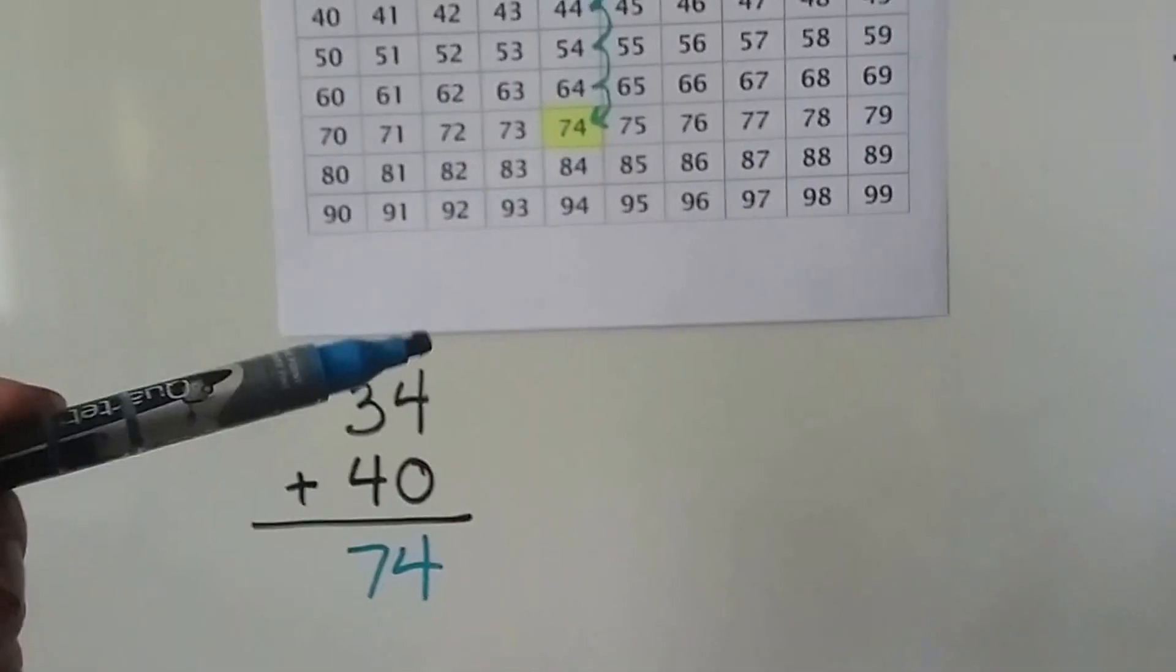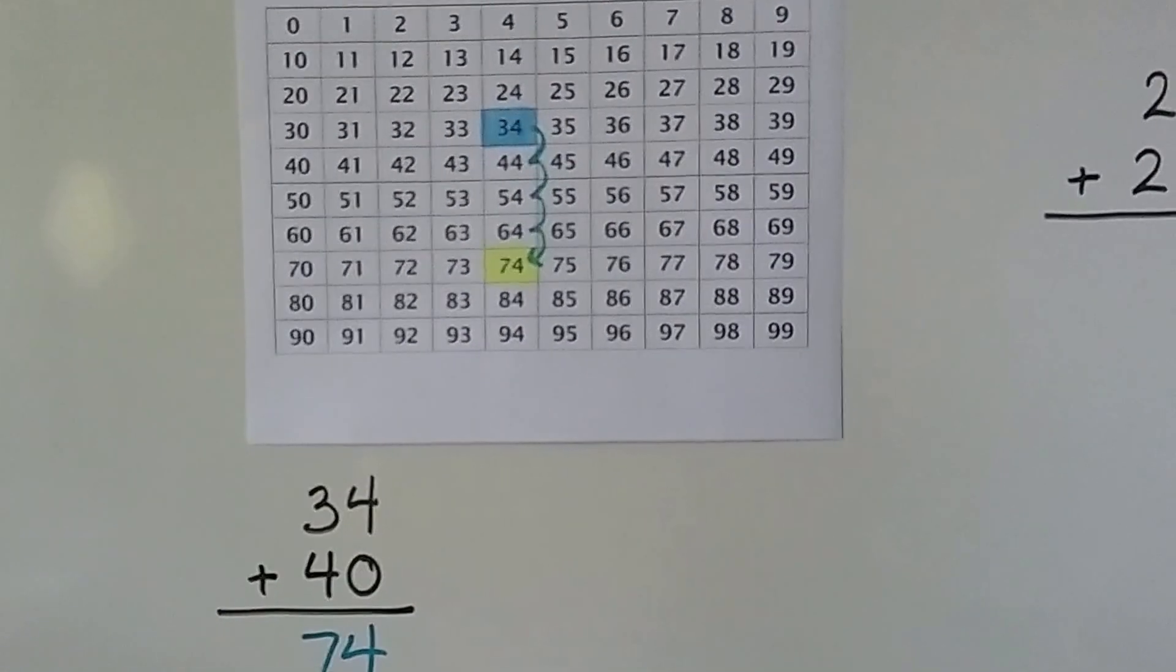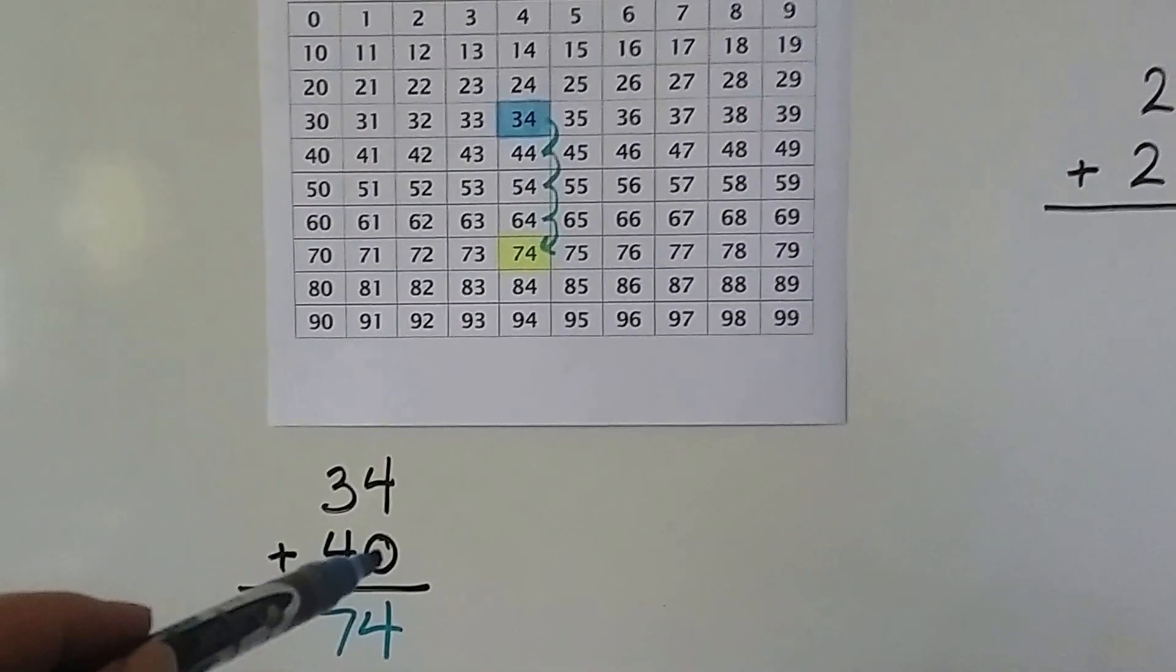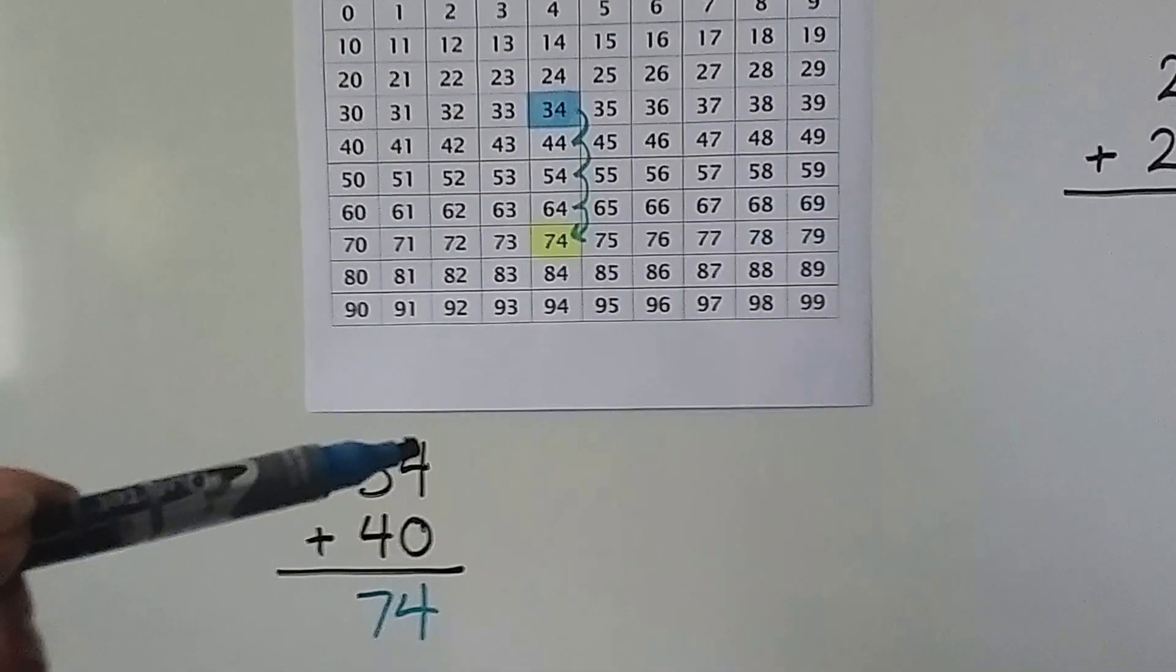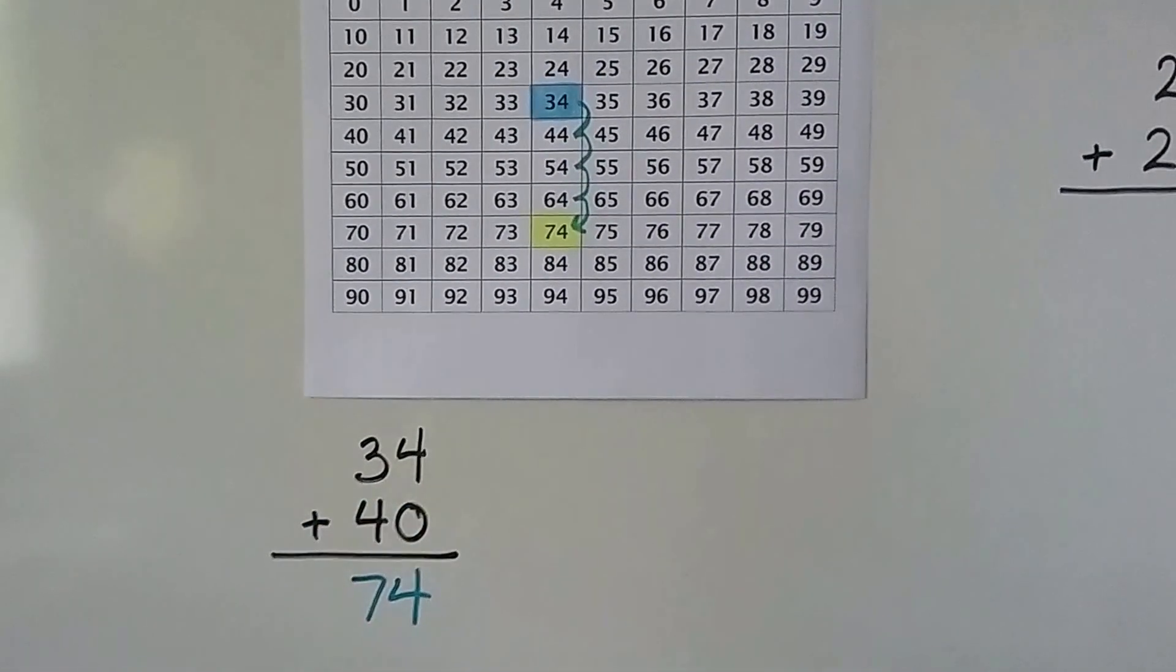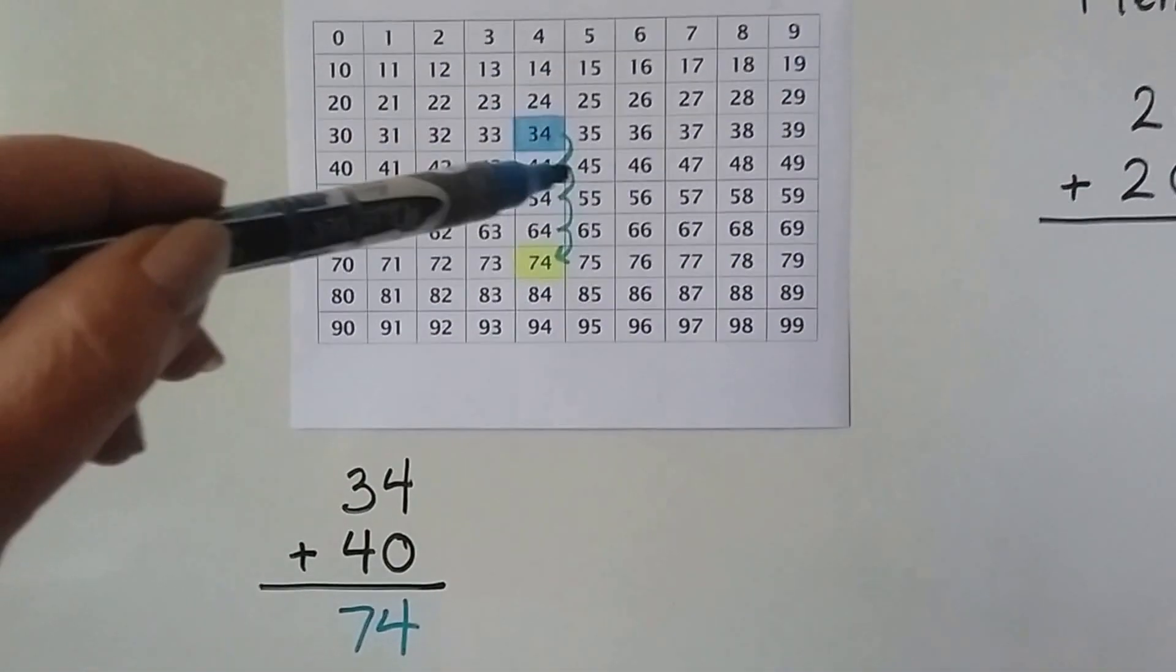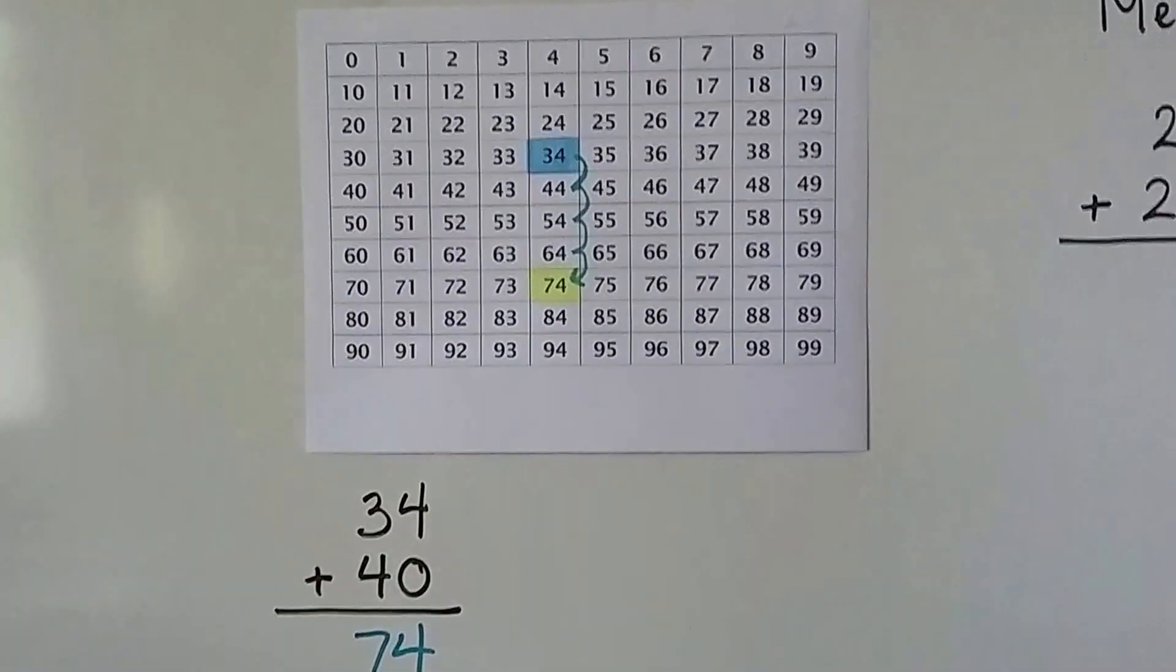And the reason it worked to use a hundred chart on this one is because there was no ones here. It was zero ones. We were adding something that had ones to something that didn't have ones in the ones place. See that? So the hundred chart, we just skip down by the 4 tens.